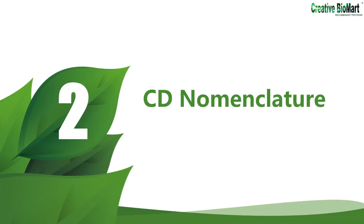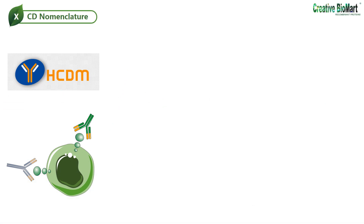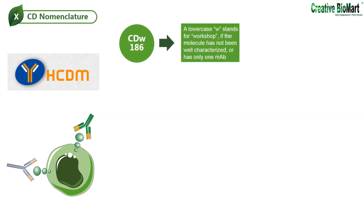CD nomenclature. The CD nomenclature was proposed and established in the first international workshop and conference on human leukocyte differentiation antigens, HLDA. This system was intended for the classification of the many monoclonal antibodies generated by different laboratories around the world against epitopes on the surface molecules of leukocytes. The proposed surface molecule is assigned a CD number once two specific monoclonal antibodies are shown to bind to the molecule. A lowercase w preceding the number designation stands for workshop if the molecule has not been well characterized, or has only one monoclonal antibody; it is usually given the provisional indicator W, as in CDW186.